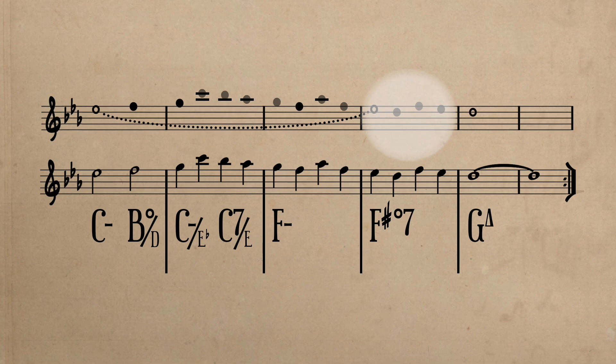Anyways, make note that F natural forms a cross relation with F sharp. Though F can be respelled as E sharp, showing its local relation as a major seventh of F sharp, the spelling of F better demonstrates its link to the underlying tonality of C.